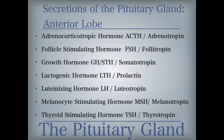The follicle-stimulating hormone, also known as follitropin, in the female stimulates secretion of estrogen and the growth of ova in the ovaries; in the male, it stimulates the production of sperm in the testicles. The growth hormone, also known as somatotropin, regulates the growth of bone, muscle, and other body tissues. The lactogenic hormone, also known as prolactin, stimulates and maintains the secretion of breast milk after childbirth. The luteinizing hormone, also known as luteotropin, stimulates ovulation in the female; in the male, it stimulates testosterone secretion.